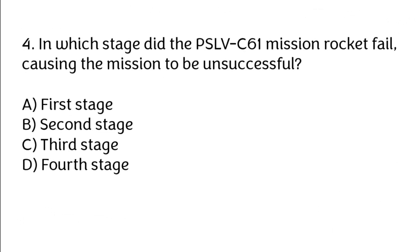In which stage did the PSLV C-61 mission rocket fail, causing the mission to be unsuccessful? A. First stage, B. Second stage, C. Third stage, D. Fourth stage. Correct answer is C. Third stage.